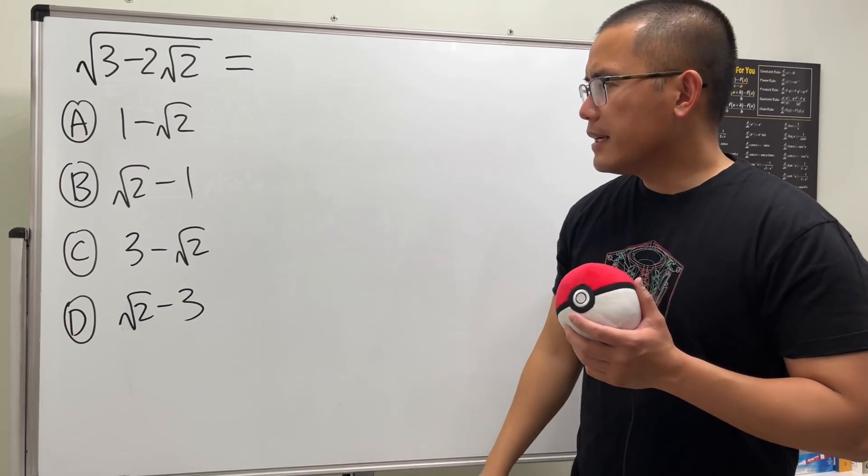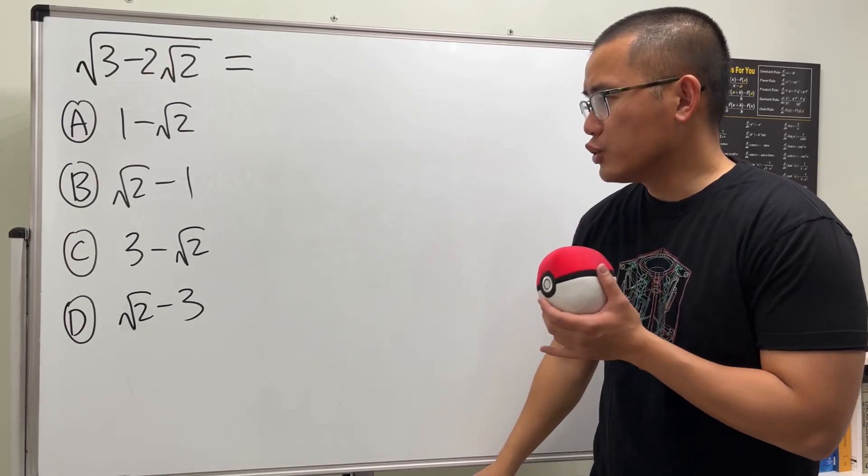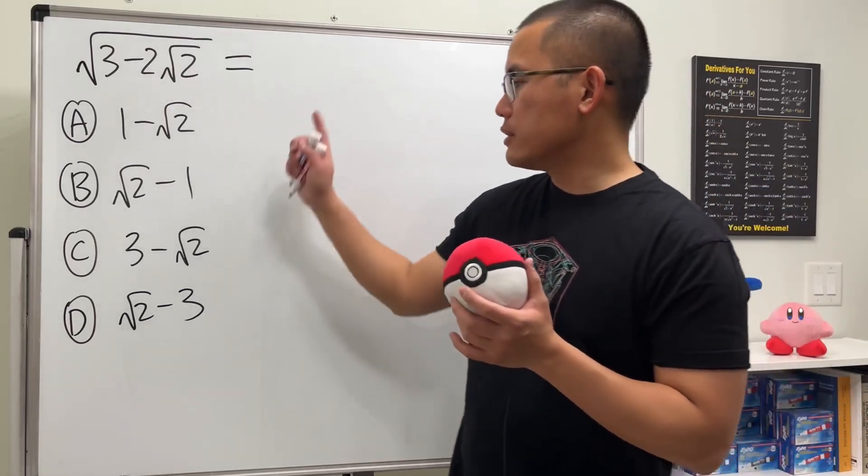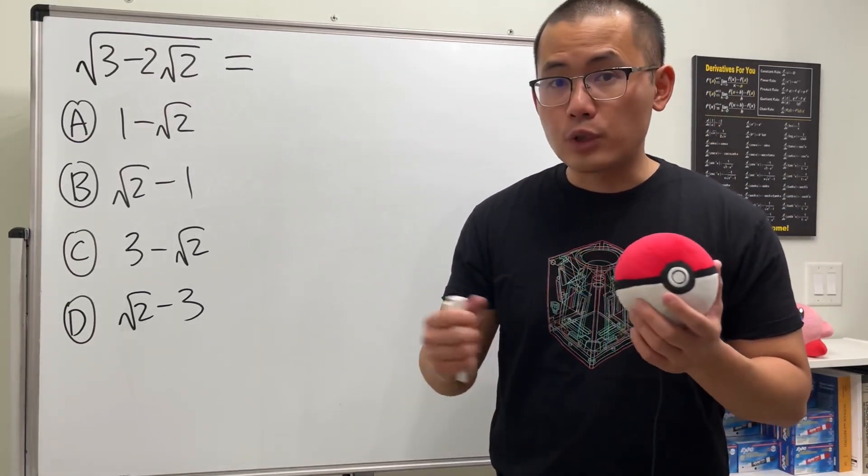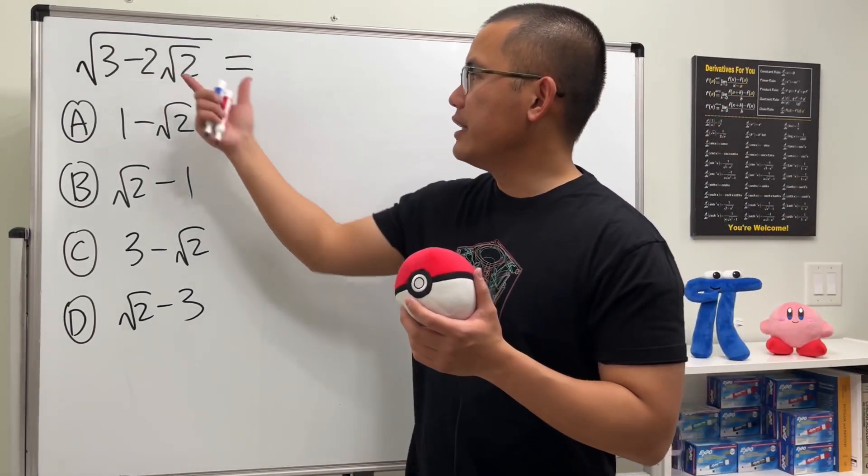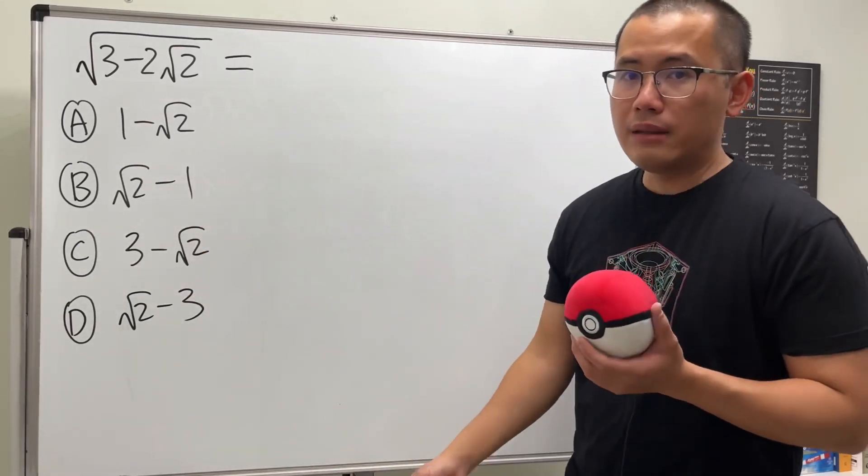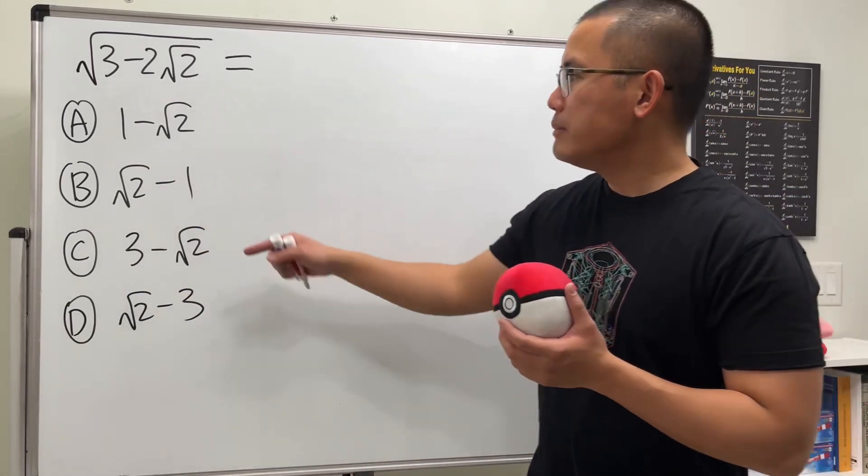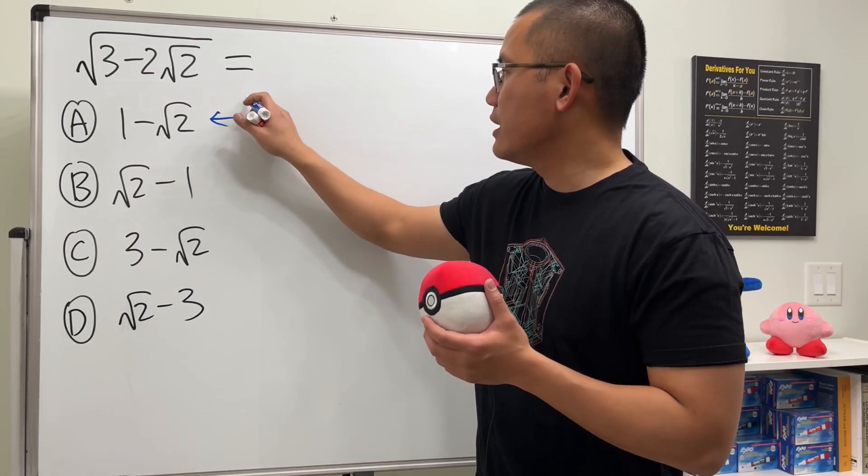Because we have these answer choices, the question is can we just pick an answer choice and then maybe square it and see if we can get the inside? If so, that will be done. Can we do that? Well, have a look. I'm just going to check with A. This is just my check, I'm just selecting that first.